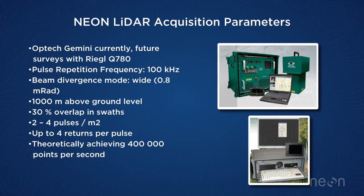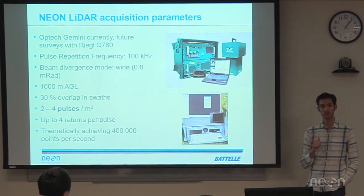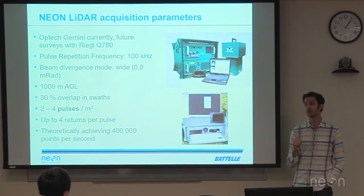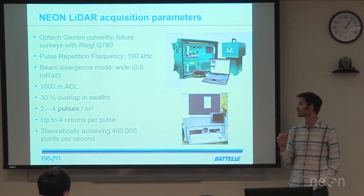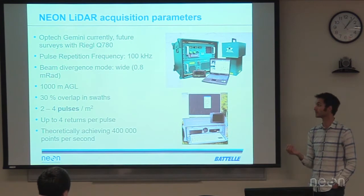Right now we run our Optech at a pulse repetition frequency of 100 kilohertz. We chose this frequency because it's the highest we can go and still maintain the accuracy we want. Going higher — it's capable of up to 167 kilohertz — results in a large degradation in accuracy.